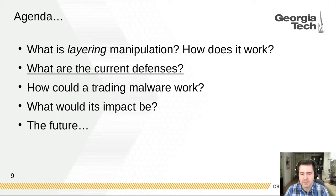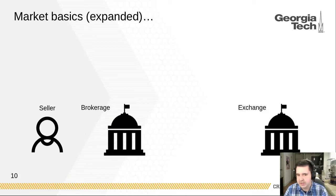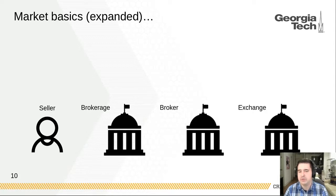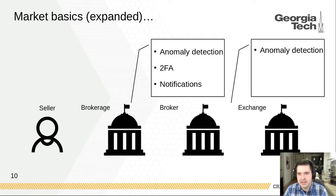So where are the current defenses at the brokerages and why are these inadequate? The seller doesn't talk directly to the exchange — they talk to a brokerage, which has brokers who bundle orders and bring them to the exchange. The brokerage has anomaly detection on accounts looking for changes in trading behavior, two-factor authentication to prevent phishing, and notifications for important events. The exchange also has an anomaly detector looking at the overall market.